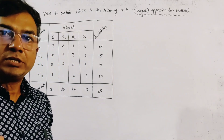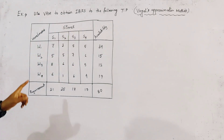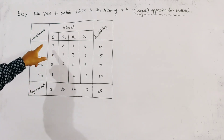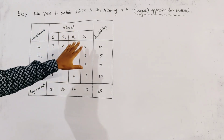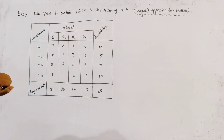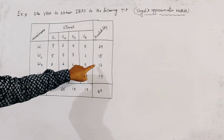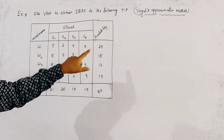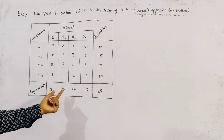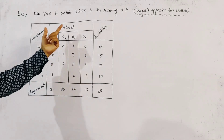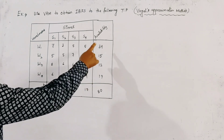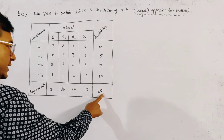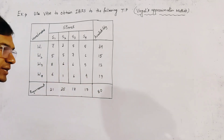A transportation problem is given in a table. A company has four warehouses and four stores, with cost coefficients shown in the table. These four values are the availability of the four warehouses and these four are the demand or requirement of the four stores. The sum of availability is 80 and the sum of requirement is also 80.